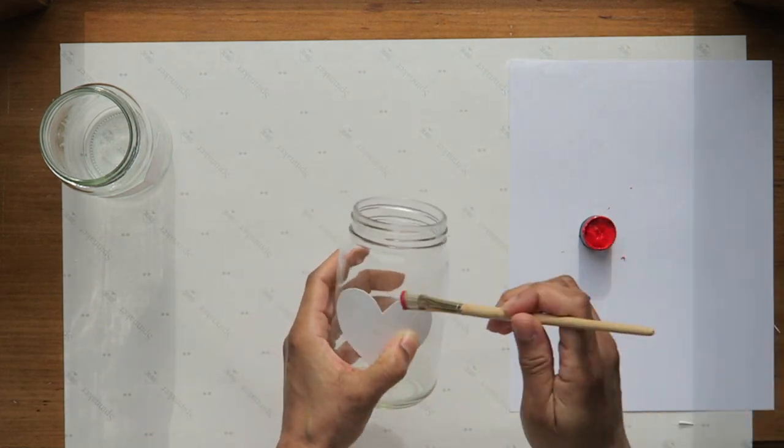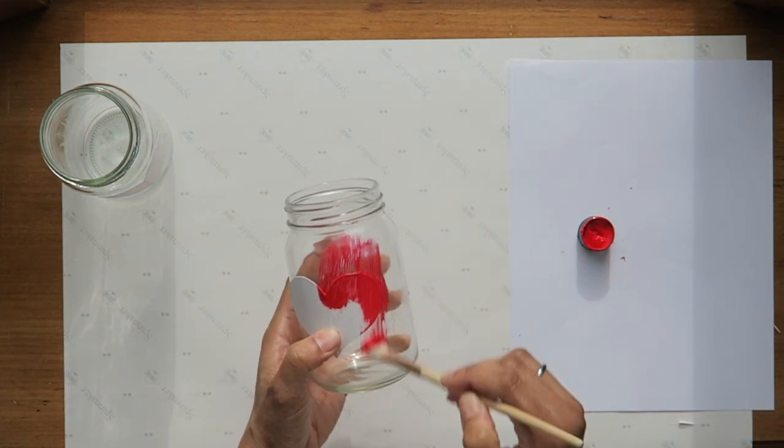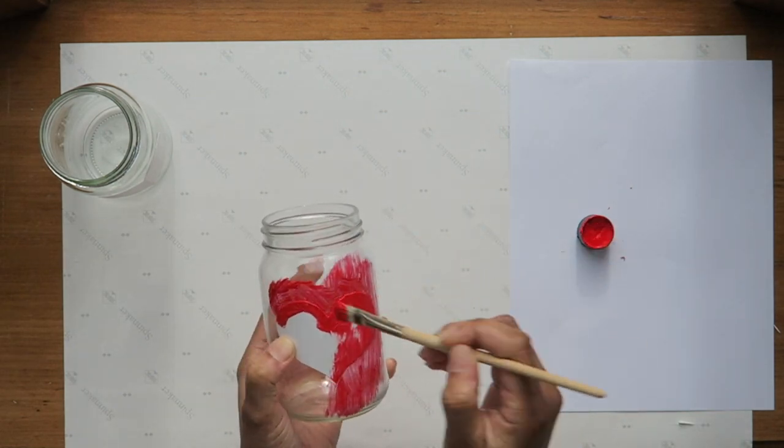I poured this into the cap as you see here, and now I'm just painting right over the heart and all over the rest of the jar.